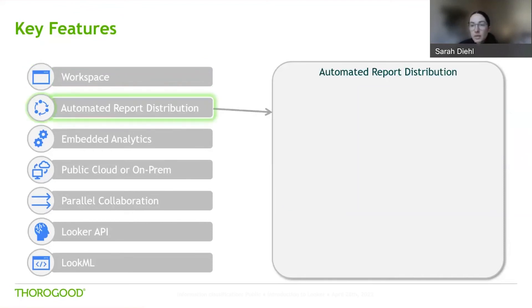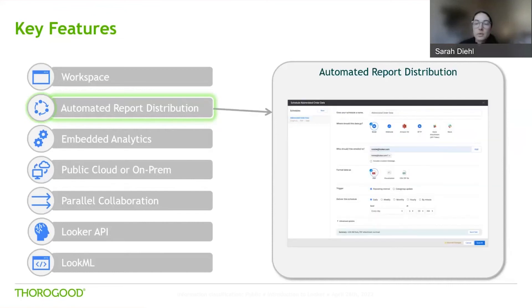Next we have Looker's automated report distribution capability. Like many BI tools, Looker provides a number of ways to share content with others in your organization. Users can navigate to reports, or you can utilize Looker's scheduling capability, which allows you to send content to a variety of destinations — both native to Looker and third-party sources. Native destinations include email, Webhook, an Amazon S3 bucket, and an SFTP server. Automating content distribution removes dependencies on individuals and speeds up time to insight, and you can also set scheduled alerts to stay up to date on data refreshes.